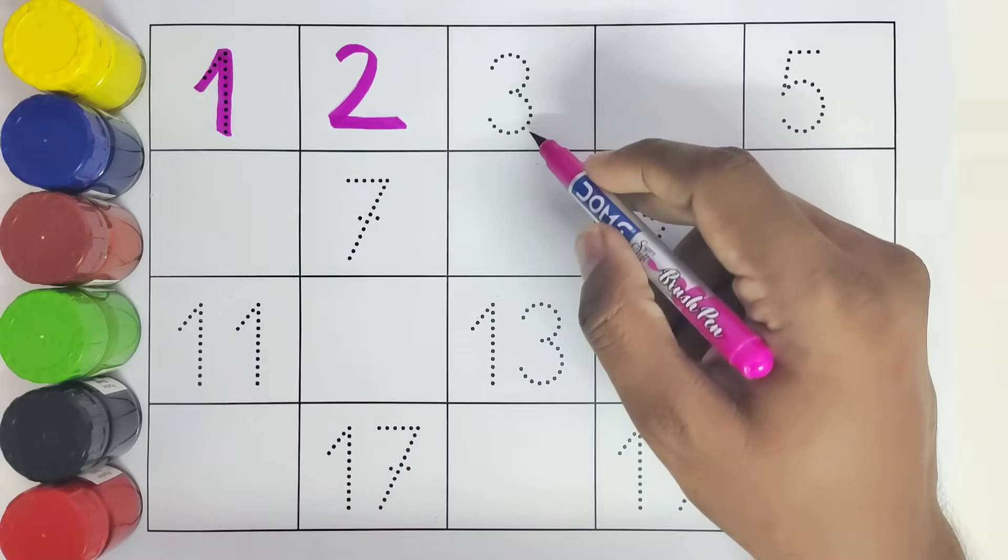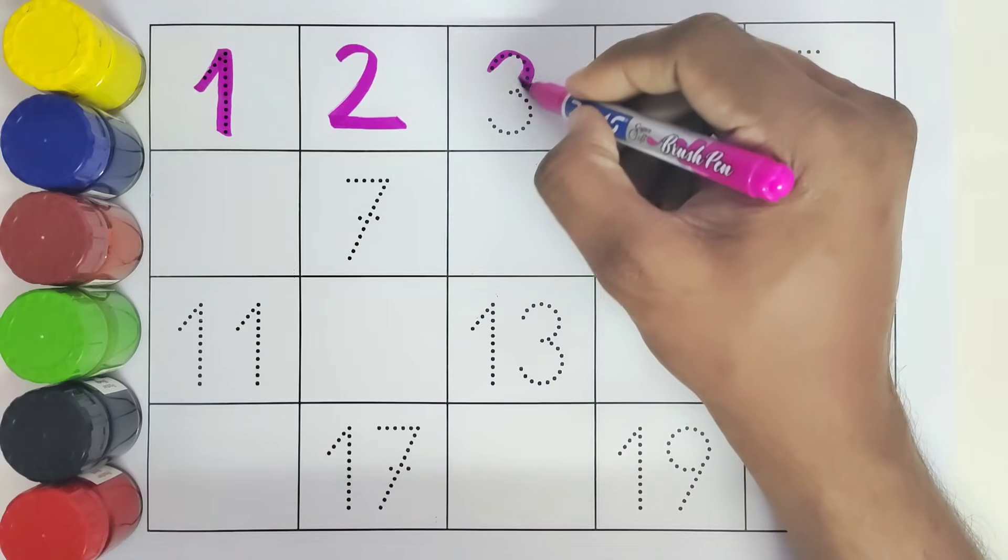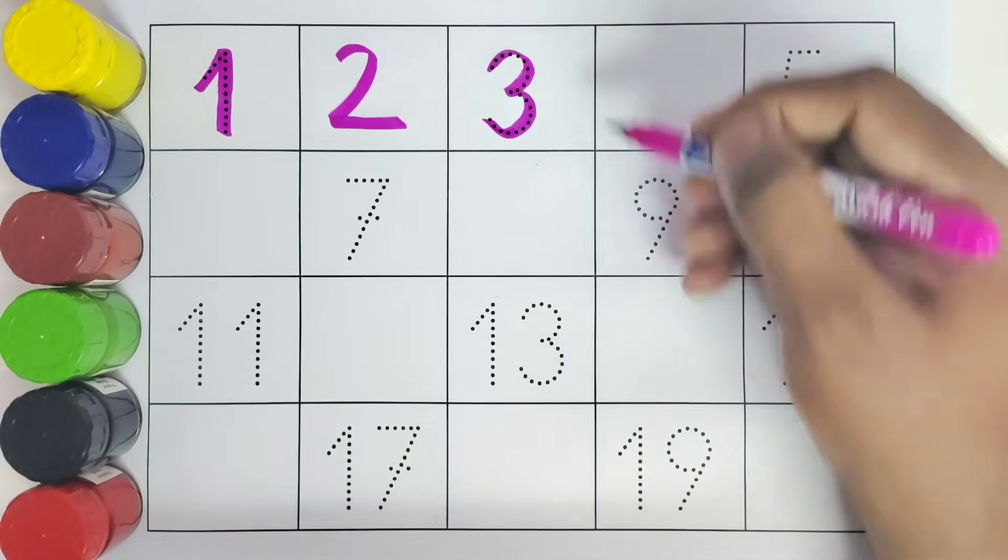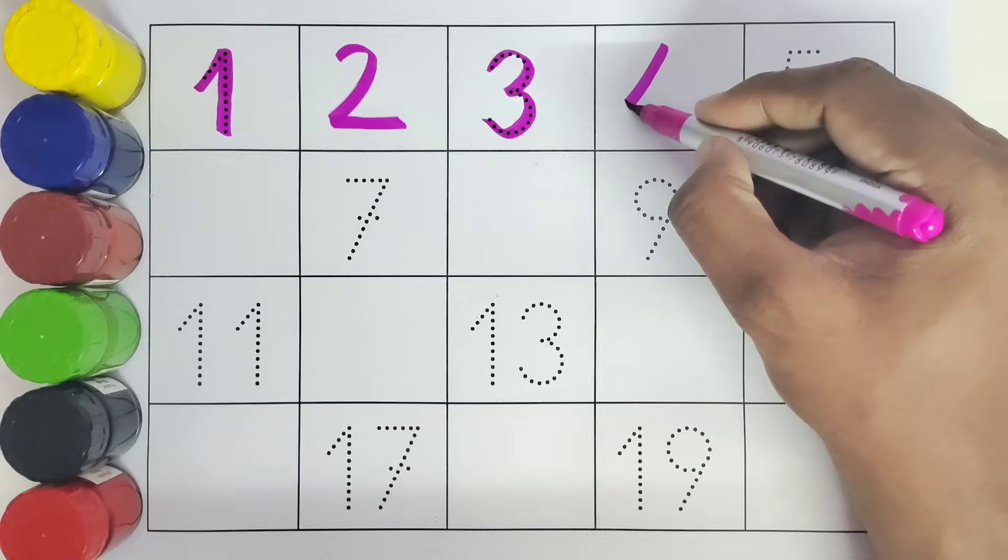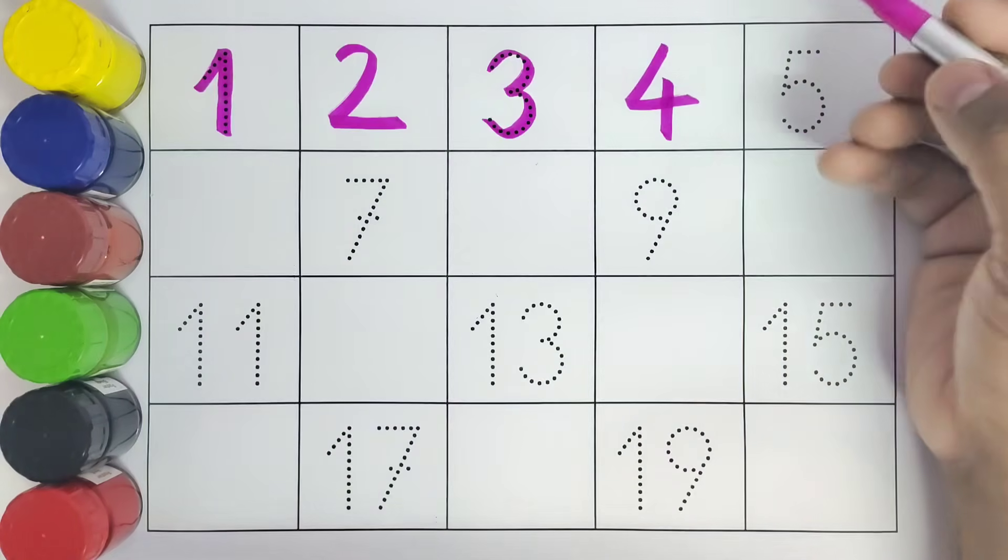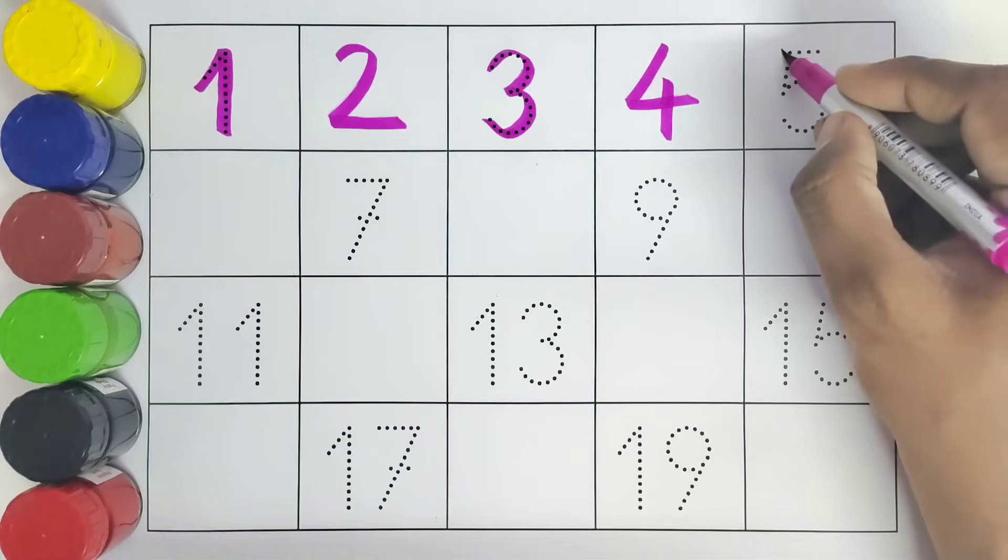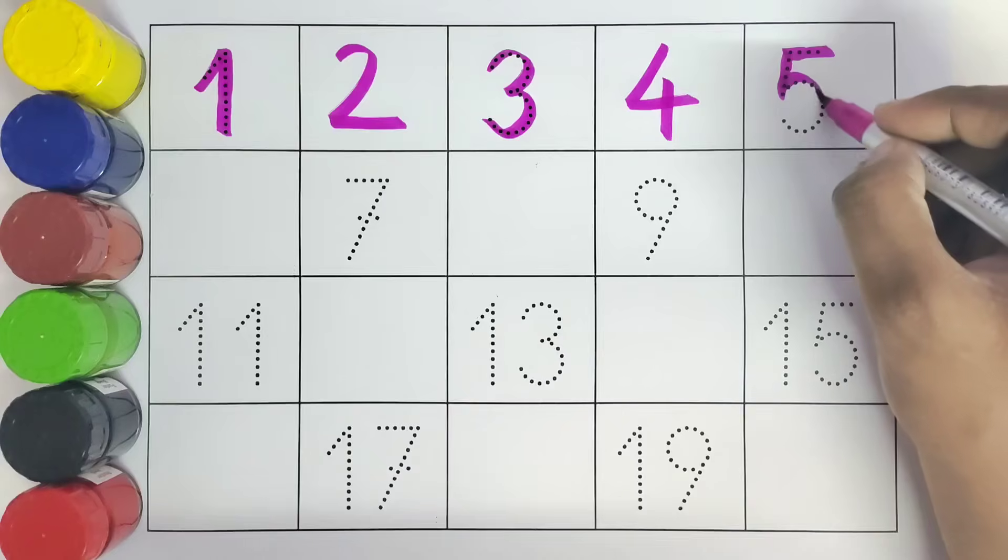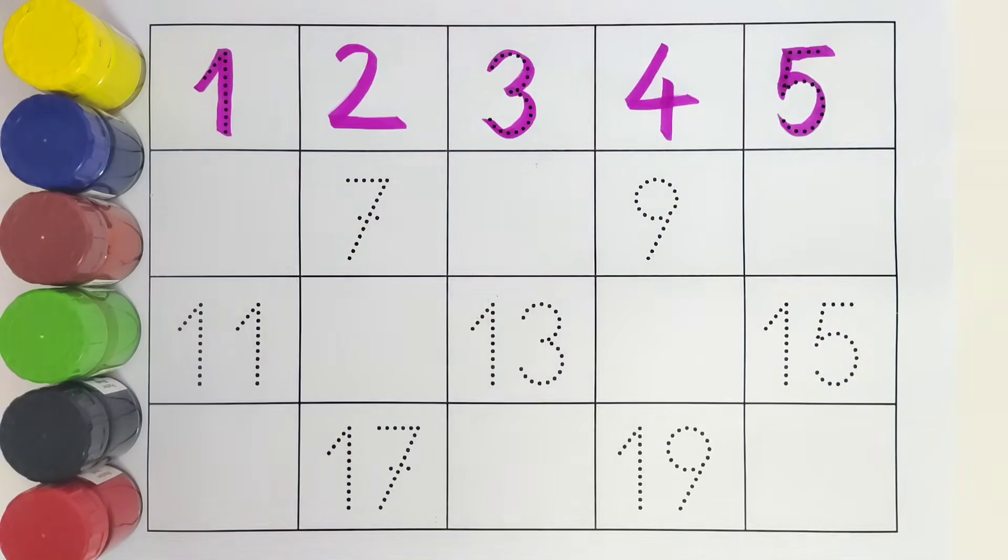This is 3, number 3. What comes after 3? 4, number 4. This is 5, number 5.